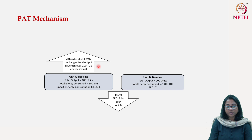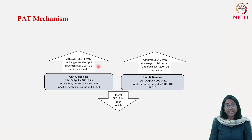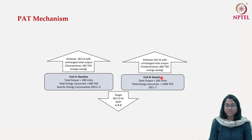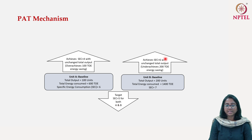Now let us see what happens with Unit B. Unit B invested less in enhanced energy efficiency, and as a result, instead of achieving an SEC of 5, it achieves only 6 — reducing from 7 to 6. It under-achieves by 200 tons of energy saving because of this gap of 1 in specific energy consumption for 200 units of production — it is lagging behind by 200 tons of oil equivalent.